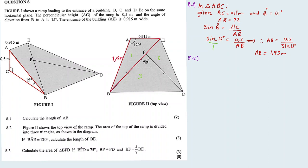I'm given two sides: 1.93 and 0.915. In between the two given lengths, I have an angle, which allows me to use the cosine rule. BE squared equals AB squared plus AE squared minus 2(AB)(AE) times cos angle A.